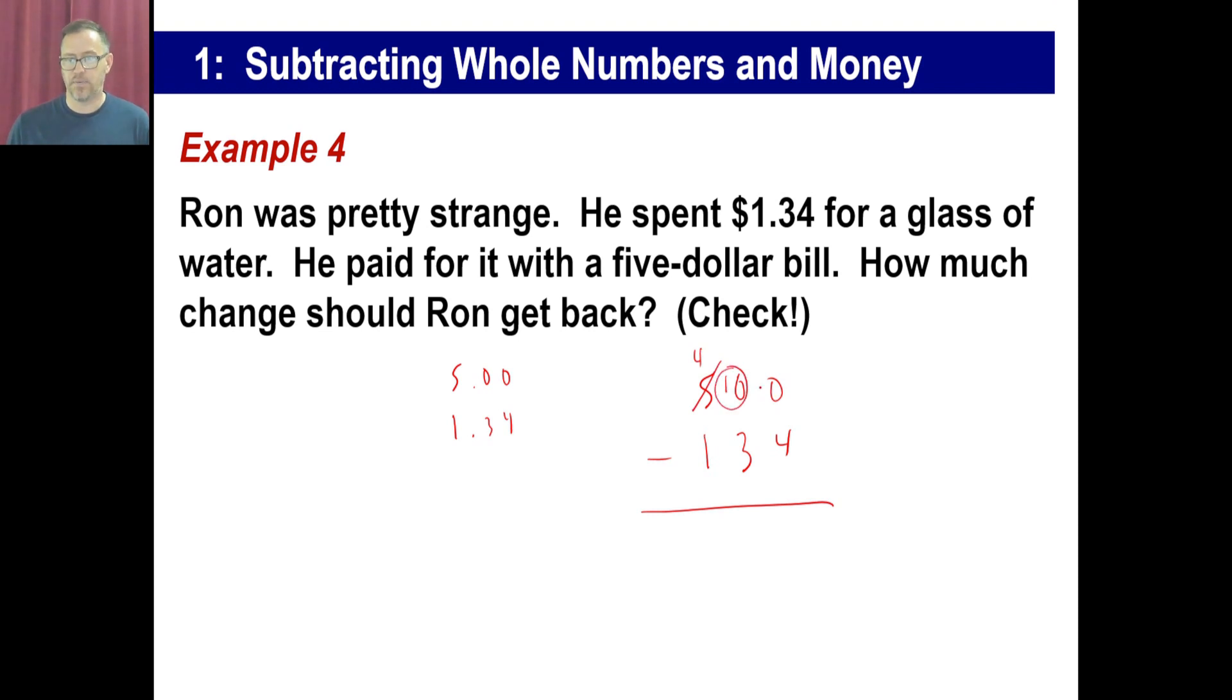Now, we can say, I'm going to borrow 1 from the 10 and make that a 9 and make that a 10. So, 10 minus 4 is 6. 9 minus 3 is 6. 4 minus 1 is 3. Of course, we know the answer is 3.66 or $3.66. To check, all you need to do is put these two and add them together. There we go. 4 plus 6 is 10. 1 plus 3 is 4 plus 6 is also 10. 1 plus 1 plus 3 is 5. There you go. $5. That's what he started out with. Ron, our friend. Okay.